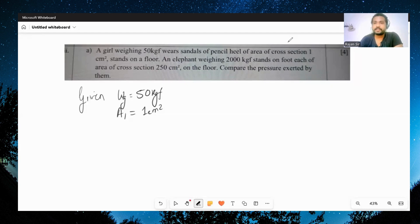A girl weighing 50 kgf with sandals of pencil heel of area of cross section 1 centimeter square stands on a floor. An elephant weighing 2000 kgf stands on foot each of area of cross section 250 centimeter square on the floor. Compare the pressure exerted by them.